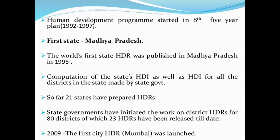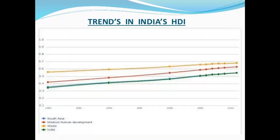The first state HDR was in 1995; in 1992, the computation of state HDI as well as HDI for all districts in the state government began. Twenty-one state governments initiated the work of district HDI, with 23 HDRs produced to date. In 2009, the first city HDR for Mumbai was launched in 2007. In terms of South Asia, Middle East, and India, the Canadian media development report developed the human development index for South Asia.